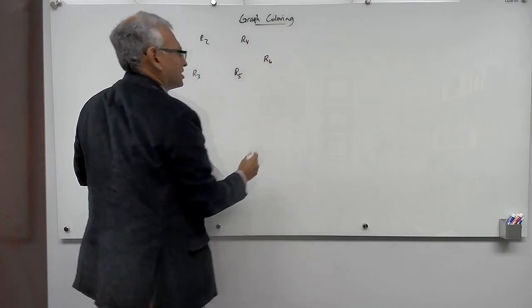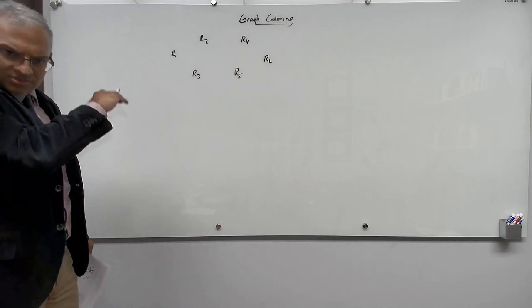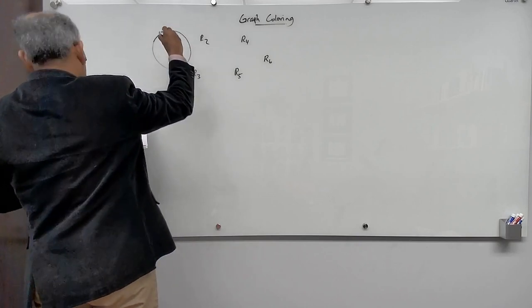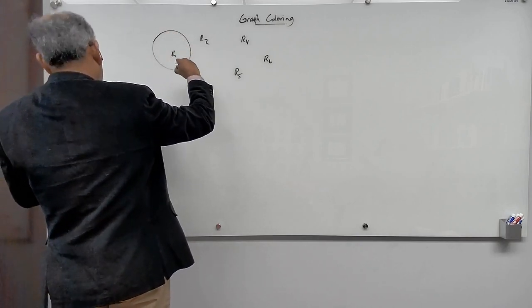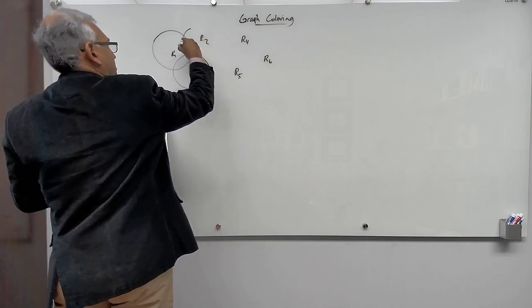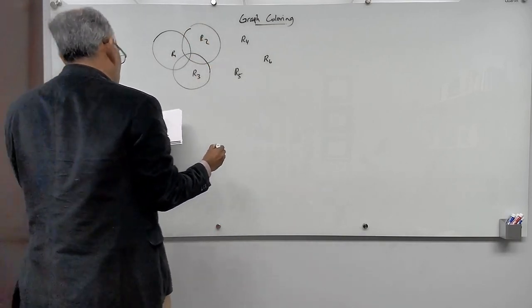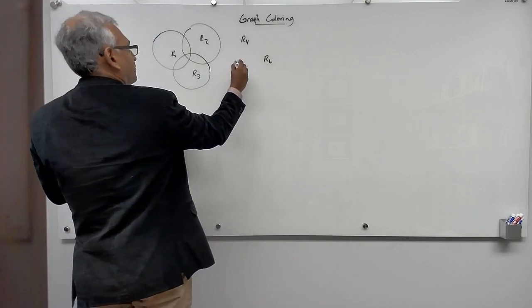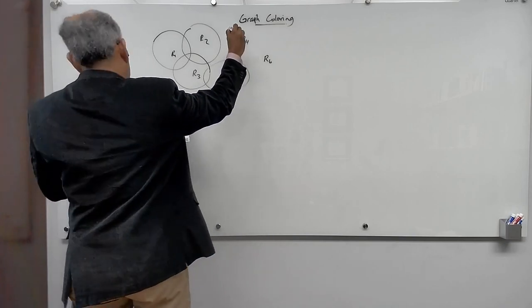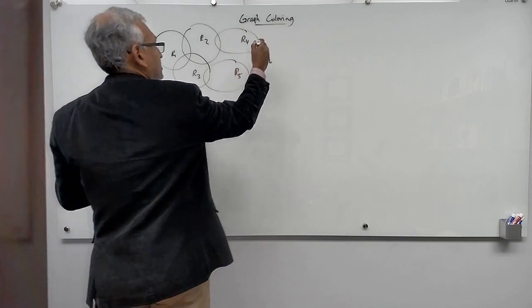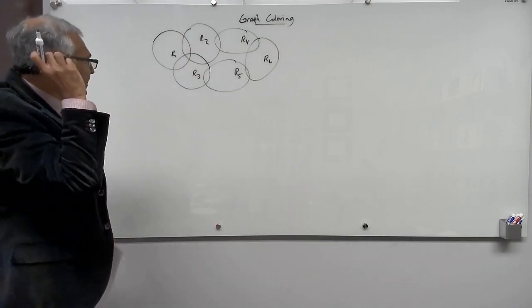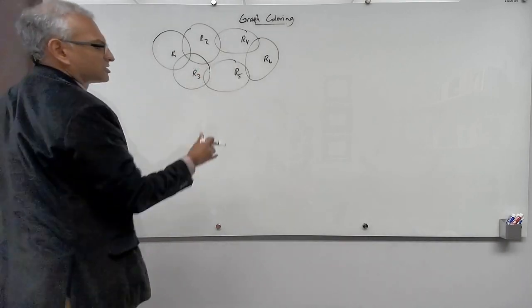Each radio station has a different reach. This is r1's reach, this is r3's reach, this is r2's reach, r5 has a certain reach, r4 has a certain reach, and r6 has a certain reach. The radio stations broadcast at a particular frequency — their frequency band.